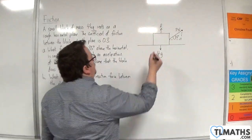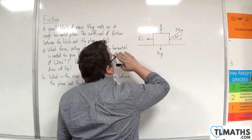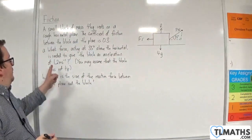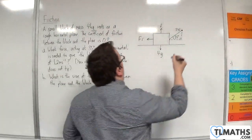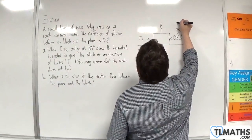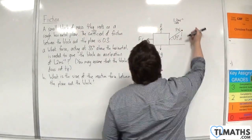Now we're going to have friction working horizontally against the direction of motion. And we're accelerating at 1.2 metres per second per second, and that's to the right.